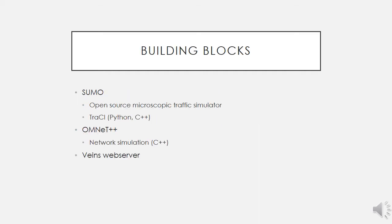The WANES framework is built up from three components. The first is the SUMO traffic simulator, the second is the OMNet++ network simulator, and to tie these together, the WANES web server.